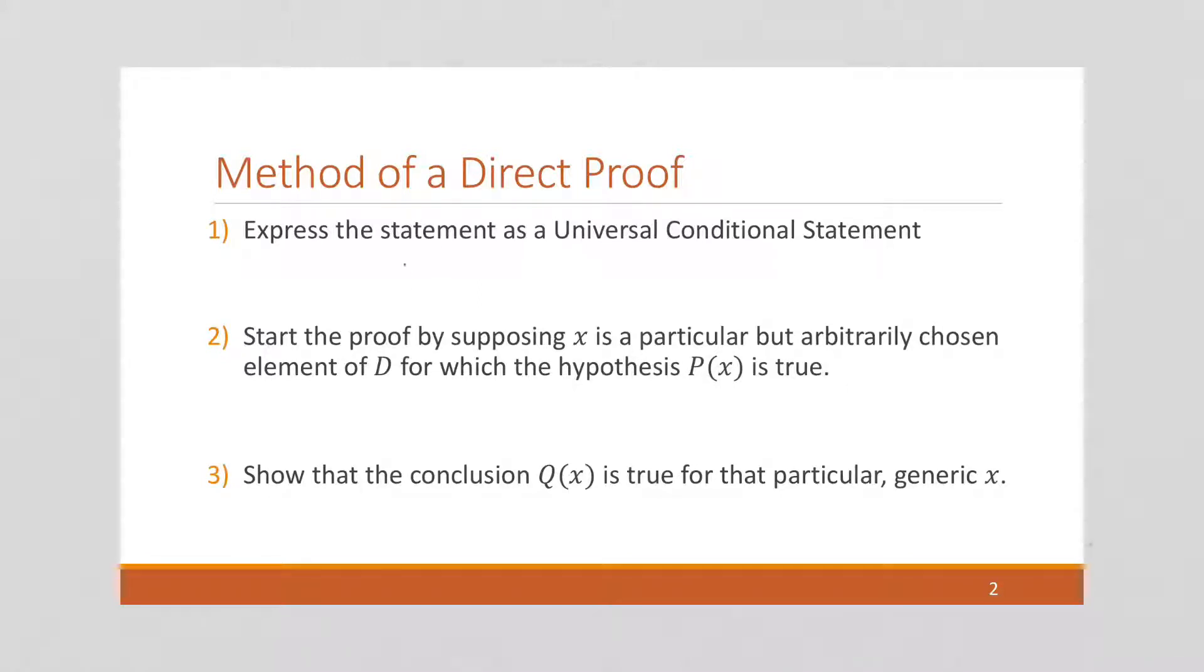Once again, let's quickly write out the method of a direct proof. We're going to write a statement as a universal conditional statement. If p of x is true, then q of x is true.